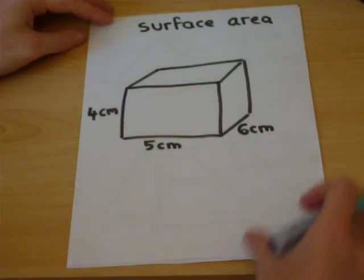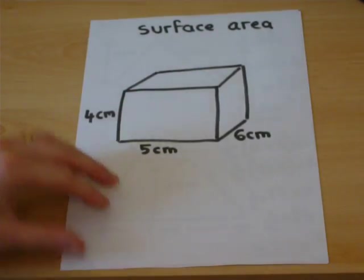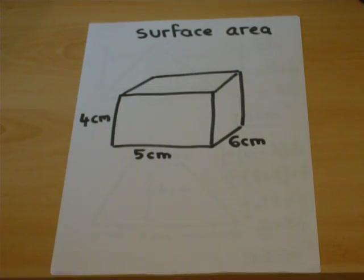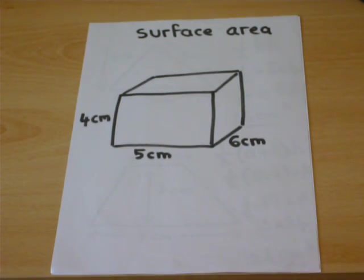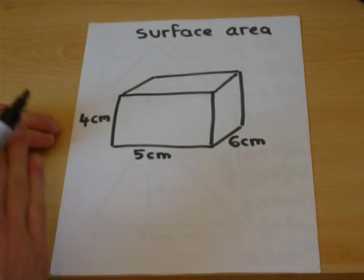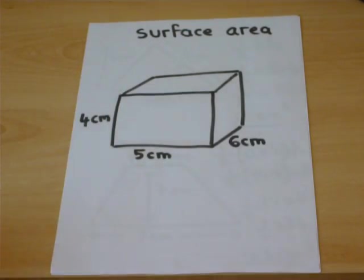The second example links area to what's called surface area. This represents the area of all the faces of the shape. Here we have a cuboid, which has six faces.